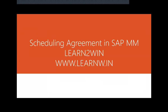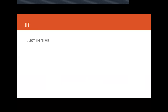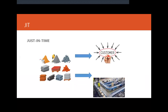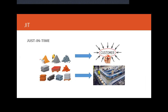Hello everybody, today we are going to see scheduling agreement in SAP MM. So what is scheduling agreement? It is JIT — just in time — that is, once the material comes in, either it directly goes to the customer or it will go to the production line. I am going to show that in the SAP live system.